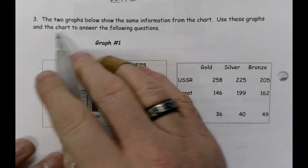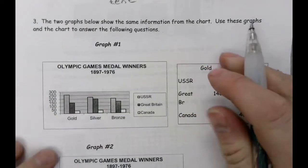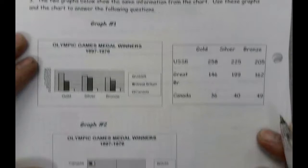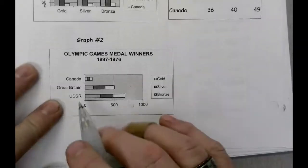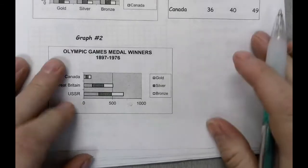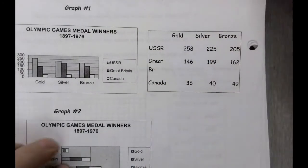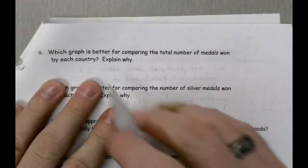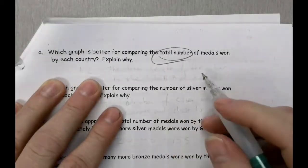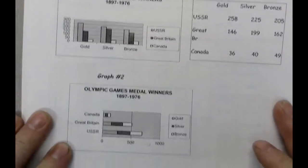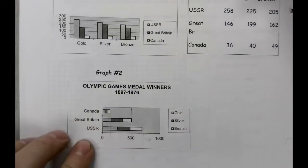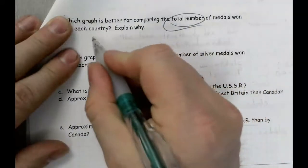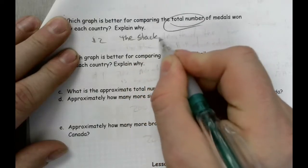In this question, we read that the two graphs below show the same information. We're looking at Olympic game medal winners — the USSR, Great Britain, and Canada — for number of gold, silver, and bronze. One is a triple bar graph and the other is a stacked bar graph. Number one: which graph is better for comparing the total number of medals won by each country? When you look between the two, the stacked bar graph has them all stacked together so I can see the totals quite clearly. The answer is the stacked bar graph — the length gives the totals.